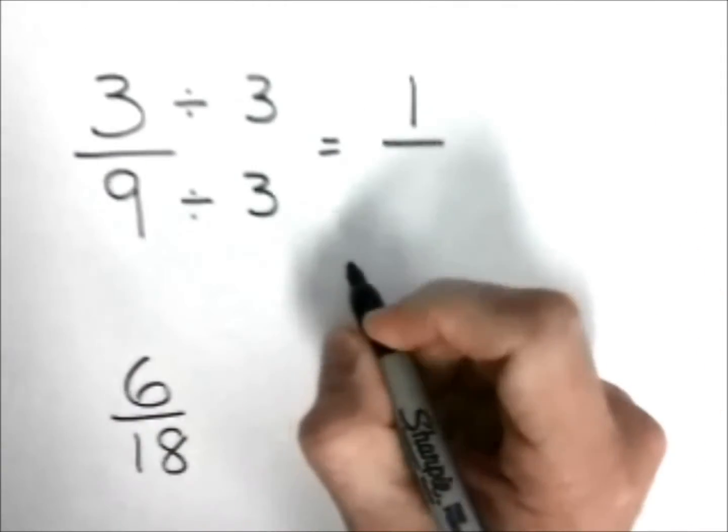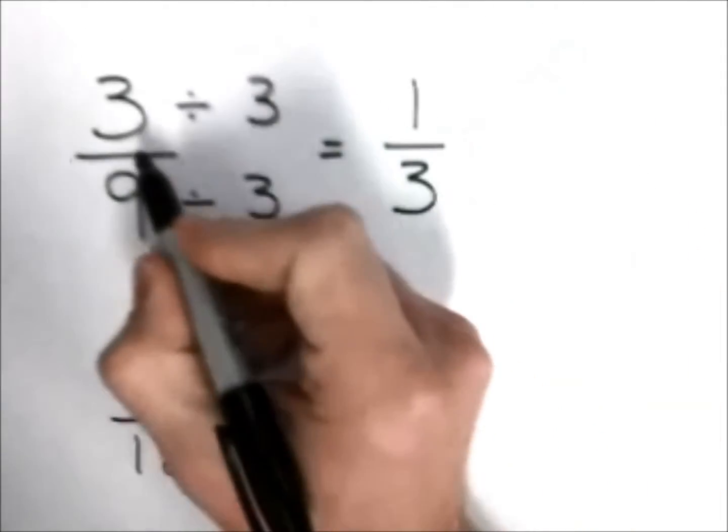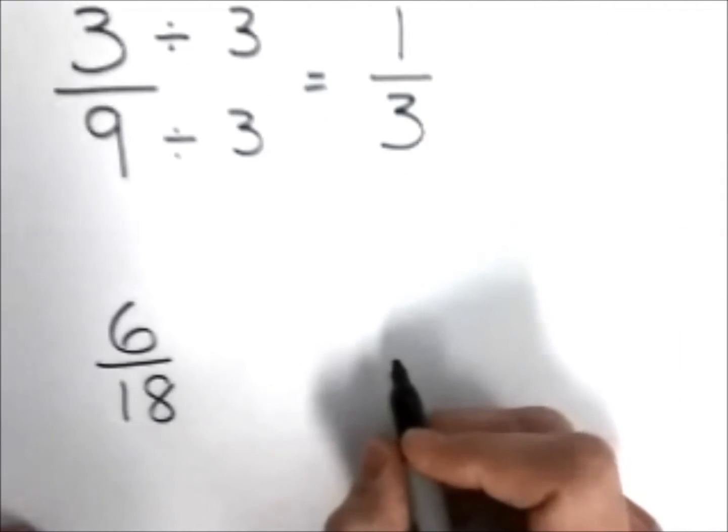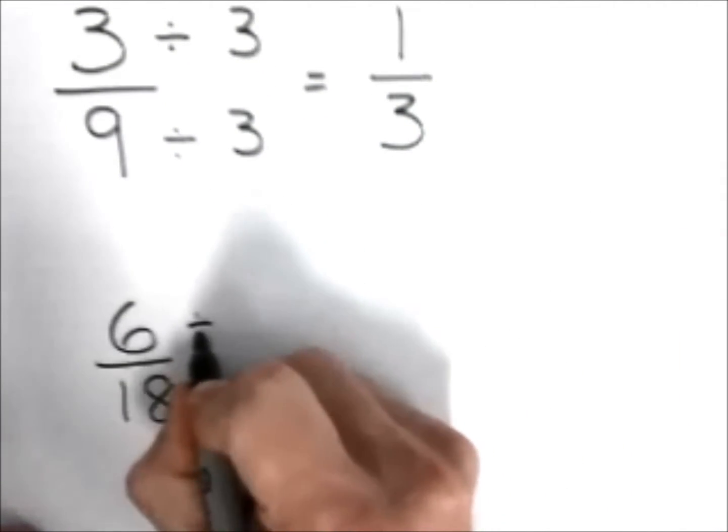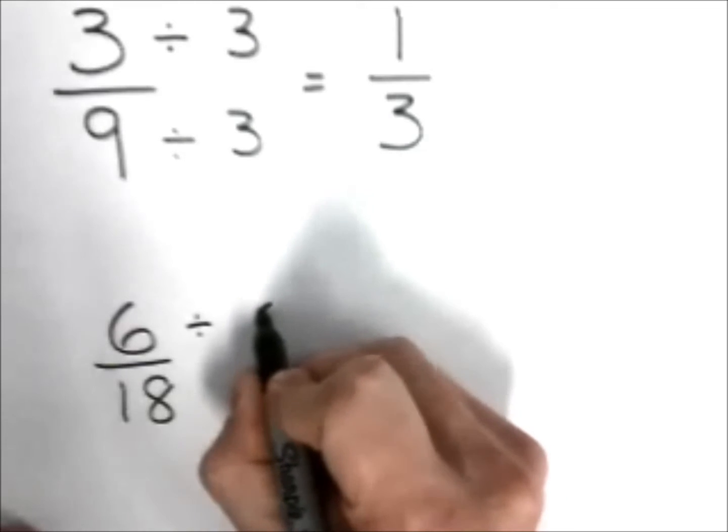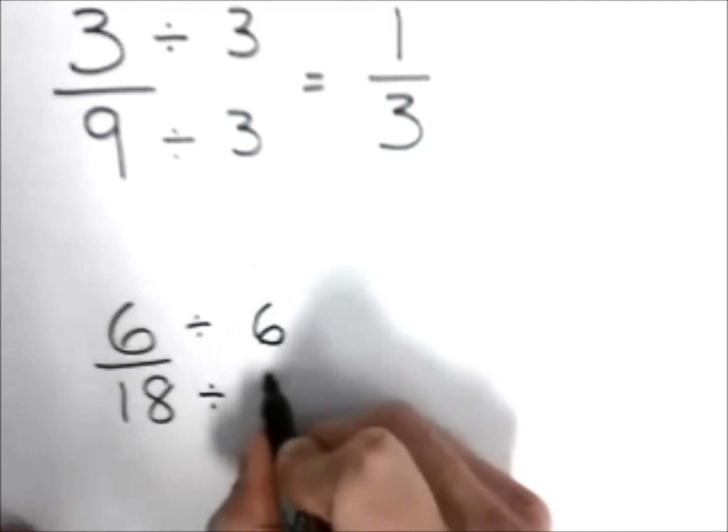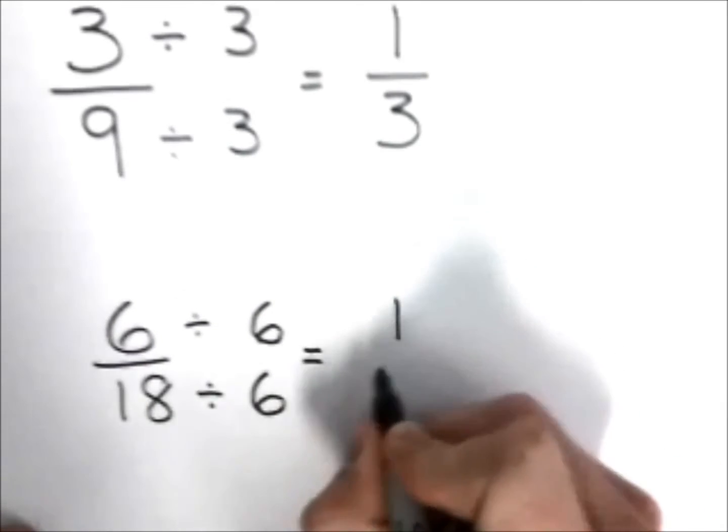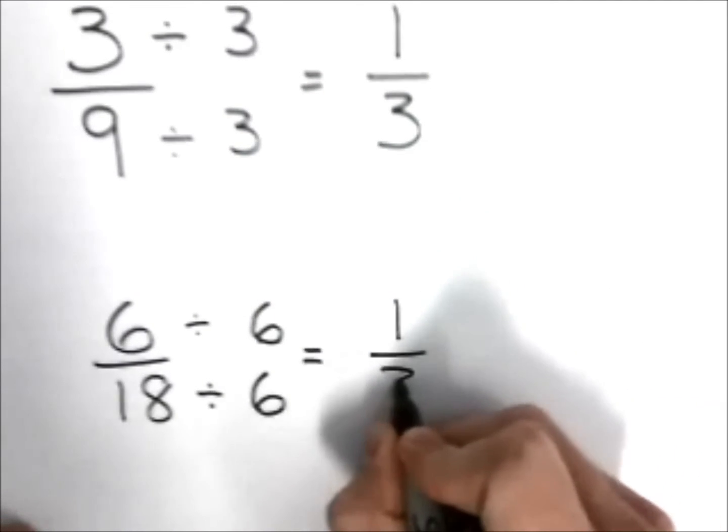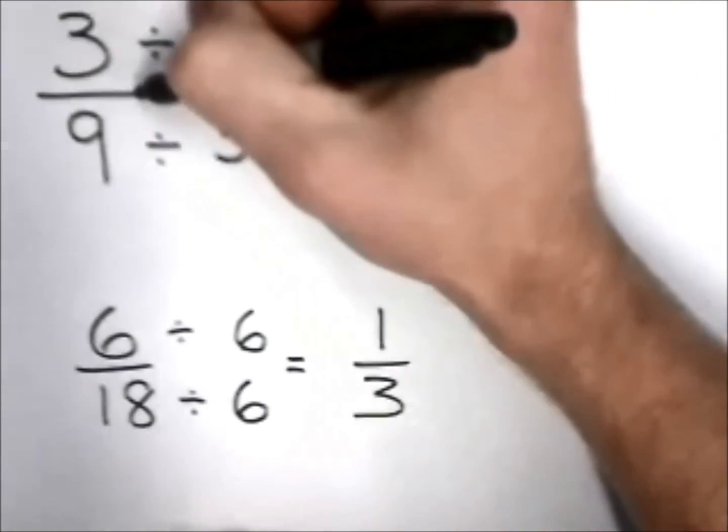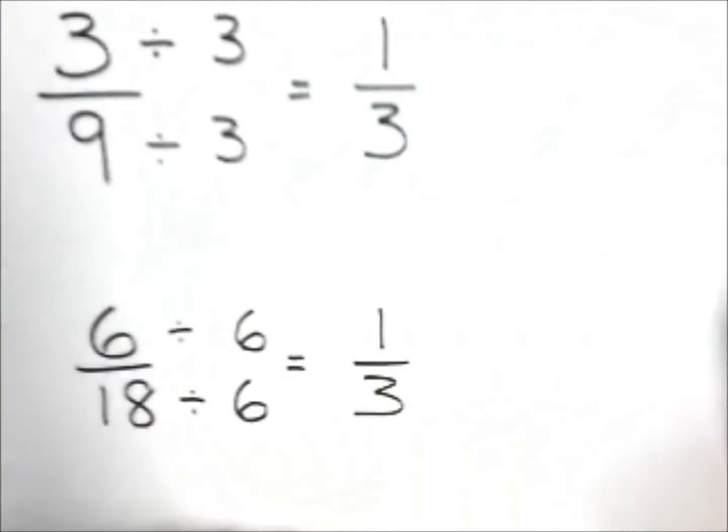Over here I have six-eighteenths, and I know that two goes into six, two goes into eighteen, three goes into six, three goes into eighteen. Wait a second—six goes into six and six also goes into eighteen. And six goes into itself once, and six goes into eighteen three times. And what do you know? One-third is the same as three-ninths, the same as six-eighteenths.